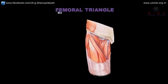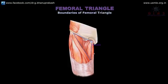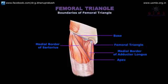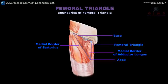The femoral triangle is bounded laterally by the medial border of sartorius and medially by the medial border of adductor longus. The femoral triangle has a medial boundary, lateral boundary, apex, and base. The lateral boundary is formed by the medial border of sartorius and the medial boundary is formed by the medial border of adductor longus. Its base is formed by the inguinal ligament and the apex is directed downwards, formed by the point where the medial and lateral boundaries meet.